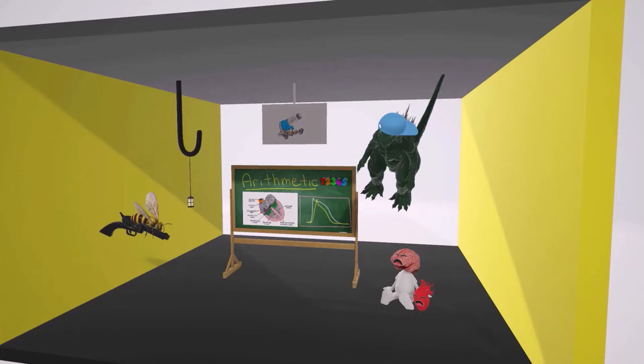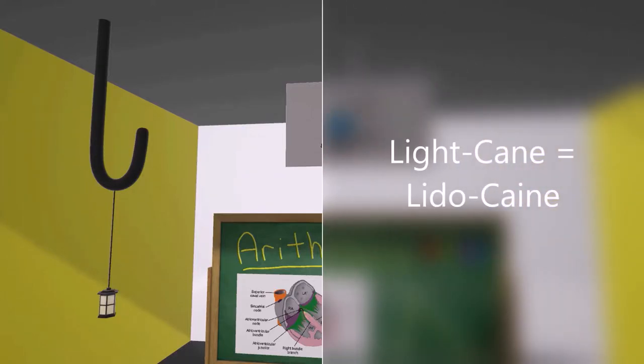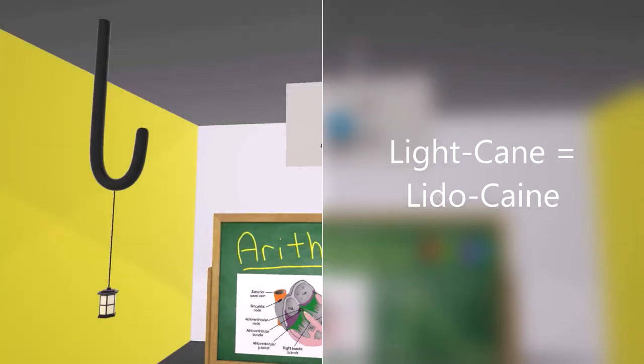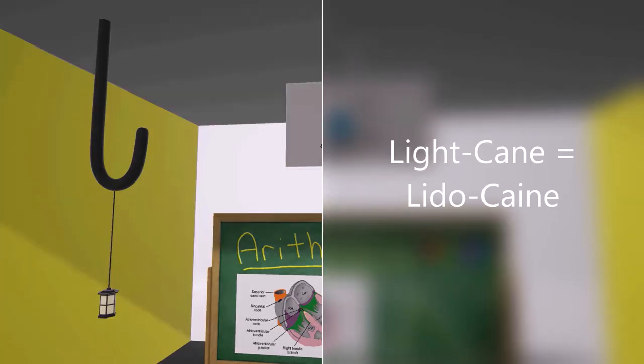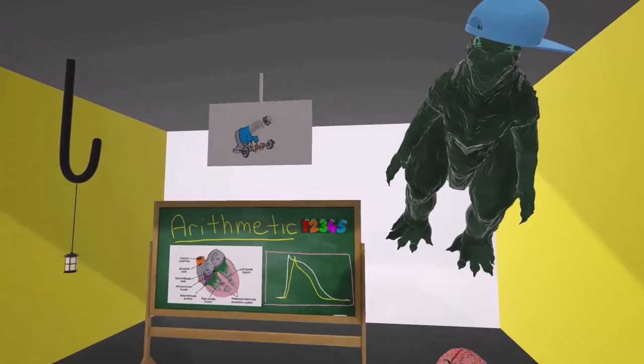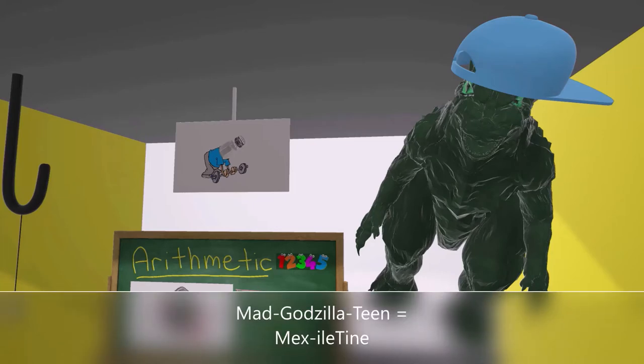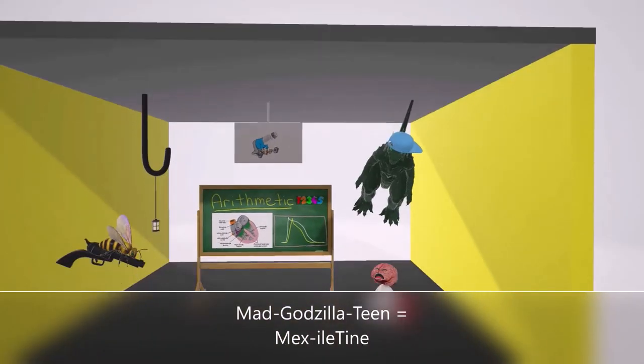the adverse effects of the Class 1B anti-arrhythmic drugs. Let's begin by taking a look at this ceiling over here. We notice this cane that produces light for the room - this is the cane light, or the light cane, light cane for lidocaine. One of the Class 1B anti-arrhythmic drugs is lidocaine. And then we see Godzilla over here who's very mad. He's really cool because he's a teen - mad Godzilla teen for mexiletine.